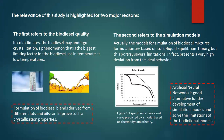The second refers to the simulation models. Currently, the models for simulation of biodiesel mixtures formulation are based on solid-liquid equilibrium theory, but present several limitations. In fact, there are very high deviations from the ideal behavior. Thus, artificial neural networks are a good alternative for the simulation models and can solve the limitations of the traditional models.